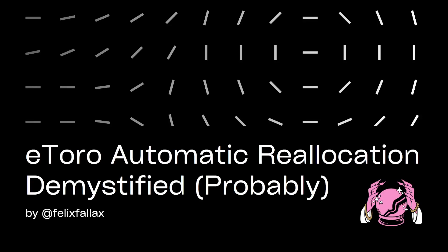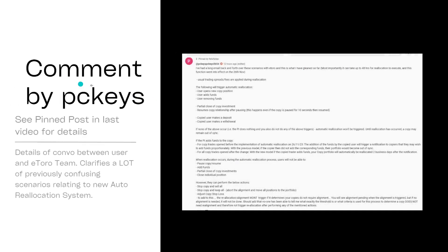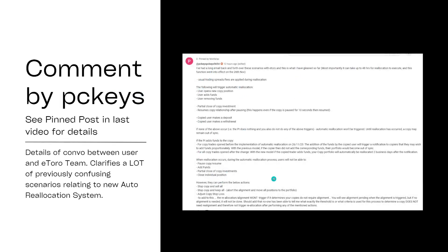Hello, this is Felix Felix. Welcome to my third video in a week on the topic of eToro's automatic reallocation system for copy trading. I think this is a really important topic and in my previous two videos I was taking some guesses as to how it might work in practice. And even though I tried it out on a more straightforward copy of Tony LaCosta, there are more complicated situations that still I wasn't sure about. However, there's been an excellent post on my last video by someone called PC Keys, which is a conversation they had with eToro about some of the more complicated aspects.